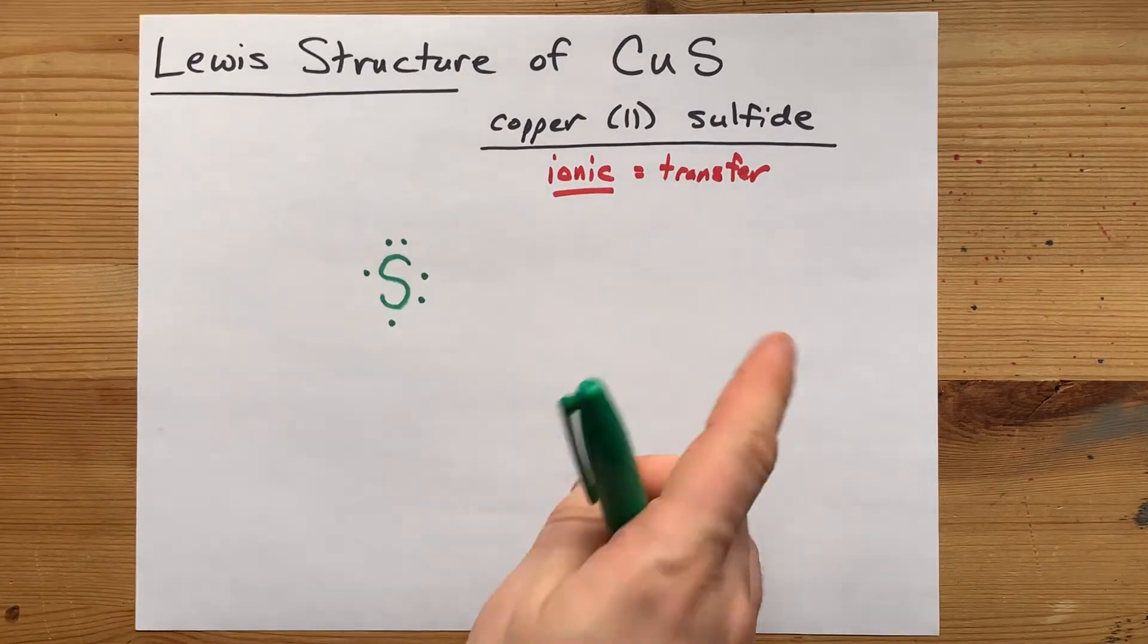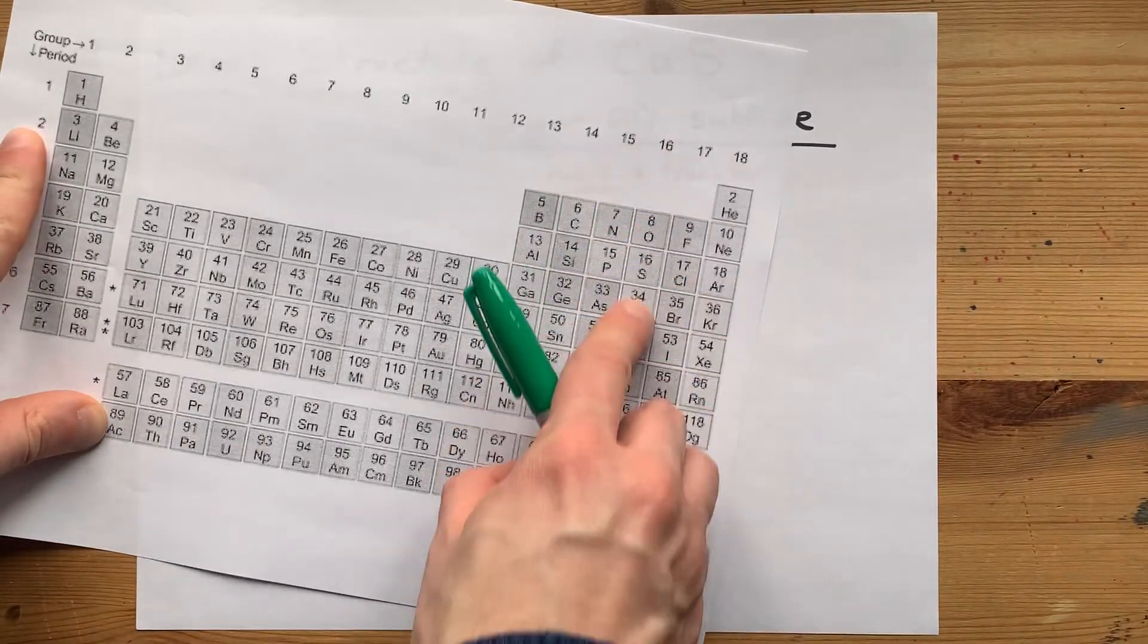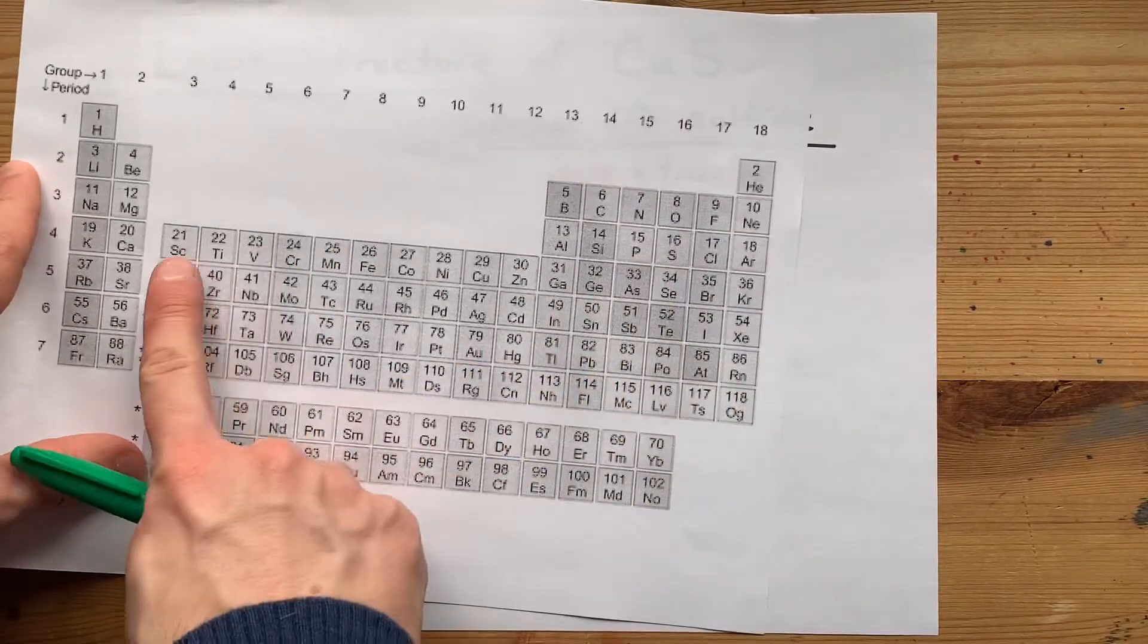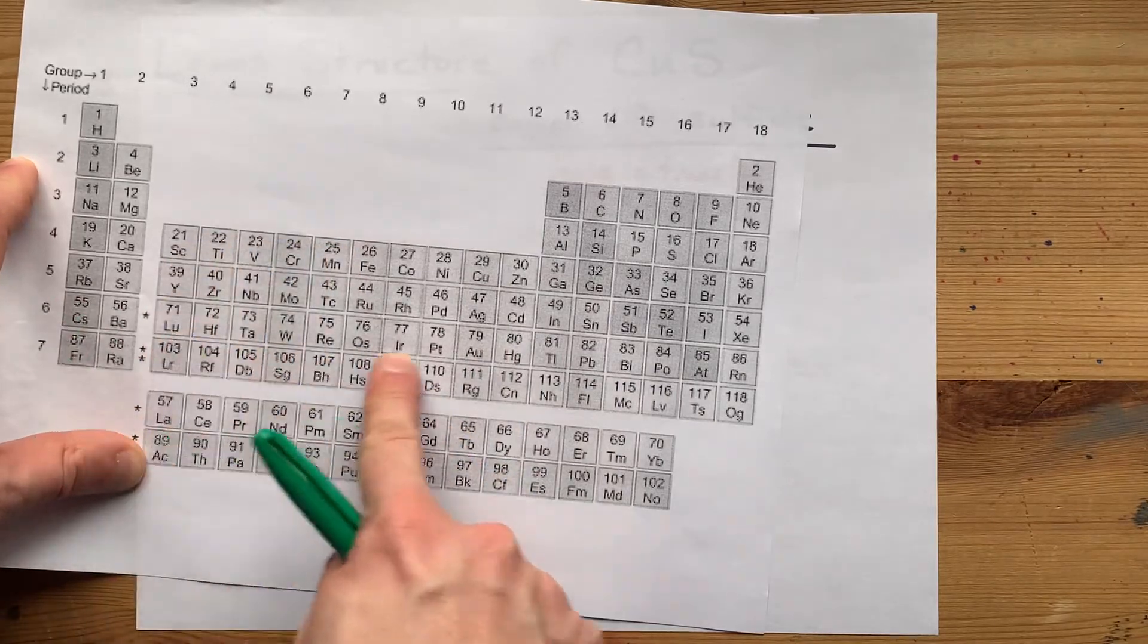And that shortcut I just showed you, where everything in group 16 brings six valence electrons, does not work for these transition metals.